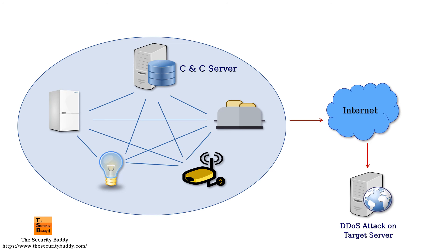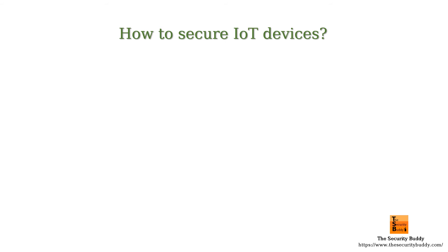Attackers often compromise thousands of IoT devices in this way and create a massive botnet, then they exploit the computation power of those devices for illegal activities. Attackers often use an IoT botnet to perform a DDoS attack. When a vast number of compromised devices send requests to a server simultaneously, it consumes all the resources of the server and makes the server inaccessible for legitimate requests, causing a DDoS attack.